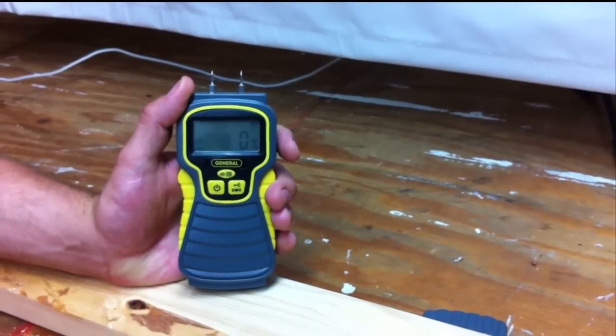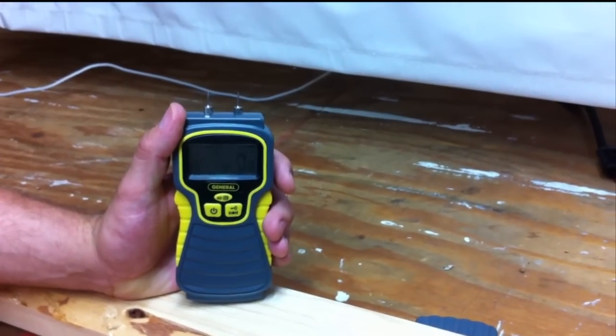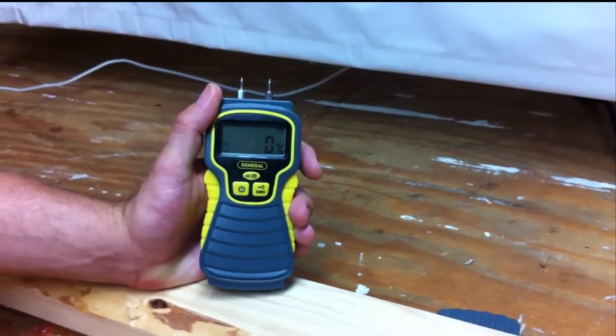And in the wood mode, it can do moisture from 5 to 50%. And in the building material mode, you get 1.5 to 33%.